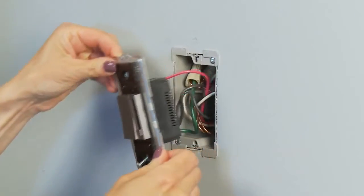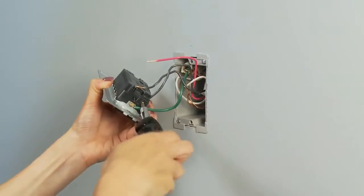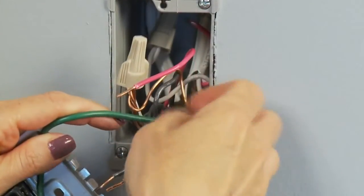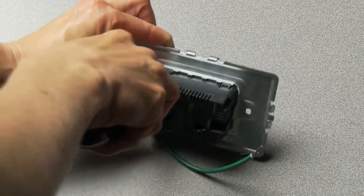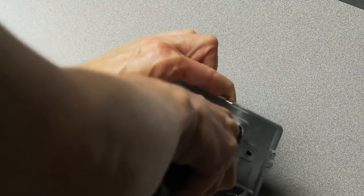If you must remove a device from the frame, you can do so by removing the frame from your wall box and depressing the four locking tabs with a flat-head screwdriver as you push the device out of the frame.